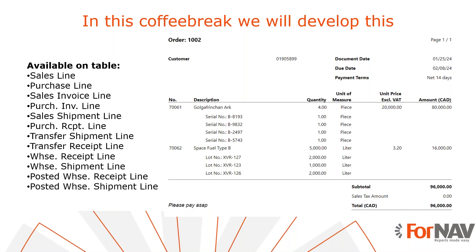Today we're going to add lot and serial numbers to your Business Central reports the easy way. We have discussed adding lot and serial numbers on documents before. The hard part is that they are stored in two separate tables: the reservation entries for unposted documents and item ledger entries for posted documents. With Fornav we now have an easy way to add these item tracking lines. For any of the supported tables, all you need to do is add a temporary table and Fornav will then do the heavy lifting for you.